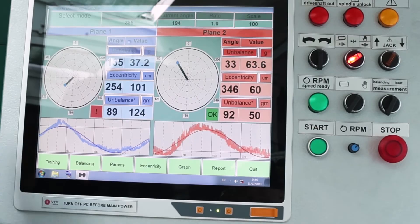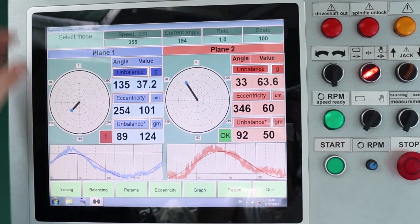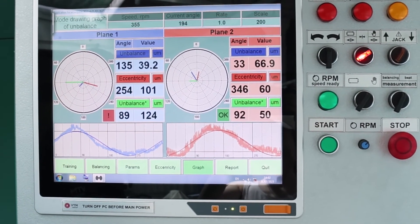We see that they are already displayed in the main window. We can switch to the graph display mode, where it will show the resultant imbalance and run-out.